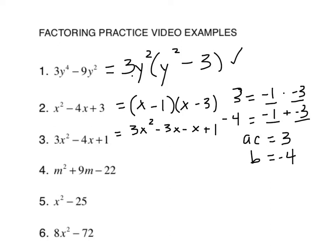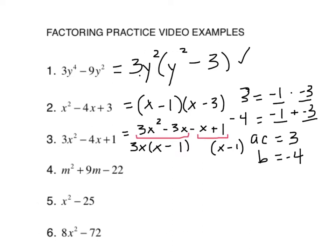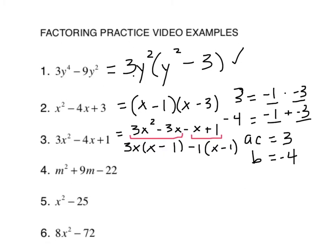3x squared minus 3x minus 1x plus 1. Now we factor by grouping. GCF here and here. Well, in the first one, the GCF is 3x. Divide out of 3x. Do it slowly and carefully. 3x squared divided by 3x, x. 3x divided by 3x, 1.